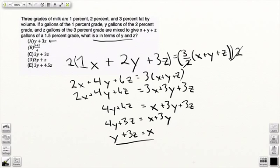Notice that there's nothing more complicated here than just setting the problem up as a mixture question, which basically means taking it in terms of percent times amount: 1% times x gallons, 2% times y gallons, 3% times z gallons. Adding this, making it equal to the new percent, 3 halves or 1.5, times the new number of gallons, x plus y plus z.